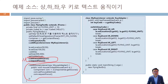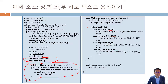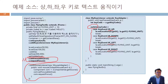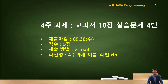키보드 상하좌우 화살표는 문자가 있는 게 아니잖아요. VK_UP, VK_DOWN, VK_LEFT, VK_RIGHT라고 해서 이것을 처리하는 방법이 있고, 또 이게 어느 키인지 알아보기 위해 switch-case 문을 사용하는 방법인데 아주 좋은 예제입니다. switch-case 문을 사용하는 것도 많이 사용되기 때문에 보도록 하겠습니다.